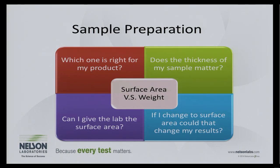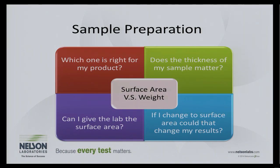Sample preparation is where everything can be variable. If you tell me you failed a test at one lab and passed at another, the first thing I'll look at is how the sample was prepared — because once we have the liquid extract, the test is pretty standard across labs. The ISO 10993 standard gives us two options for sample preparation: surface area and weight. We can use either the surface area of the patient-contacting portions or weigh the device, and that determines how much extraction volume to add.